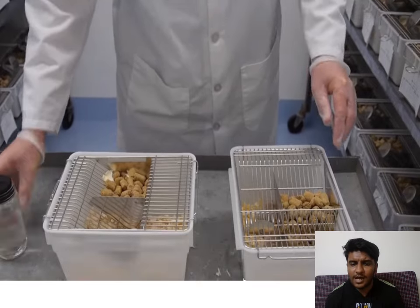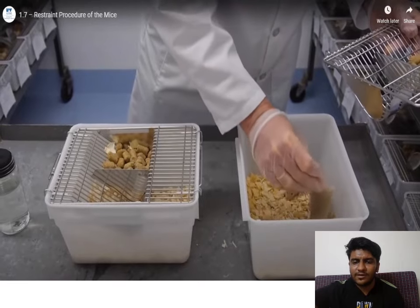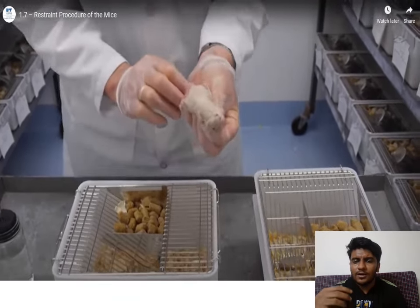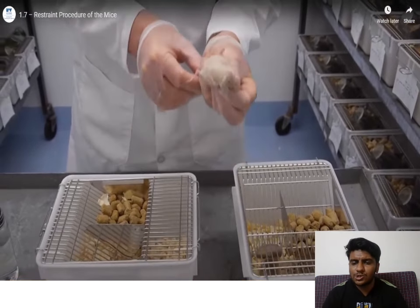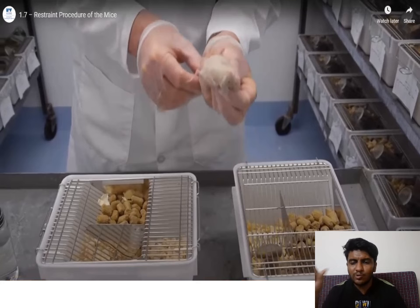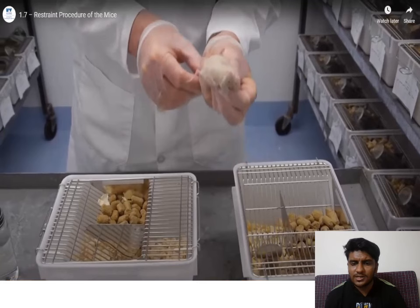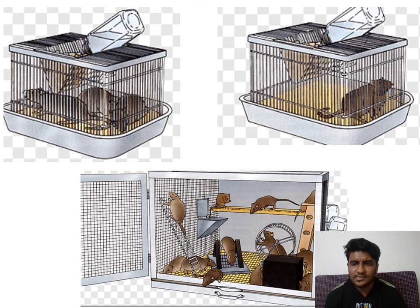This video shows how to scruff a rat or mouse. Place the animal on the cage, then carefully remove it without mishandling. After keeping it on the cage for some time, scruff it — catch the loose skin near the ears. There are C and V methods. Turn the animal upside down using your thumb, index finger, and ring finger — keep the tail between the ring finger, and use index finger and thumb for scruffing.